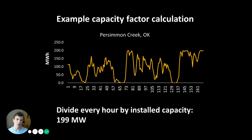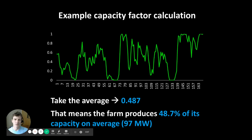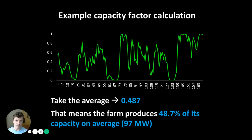Let's do a more applied example. We have the recorded output from a wind farm in Oklahoma — on the y-axis are megawatt-hours of electricity production over a one-week period of 168 hours. The output from the wind farm is really variable. This wind farm has a total installed capacity of 199 megawatts.